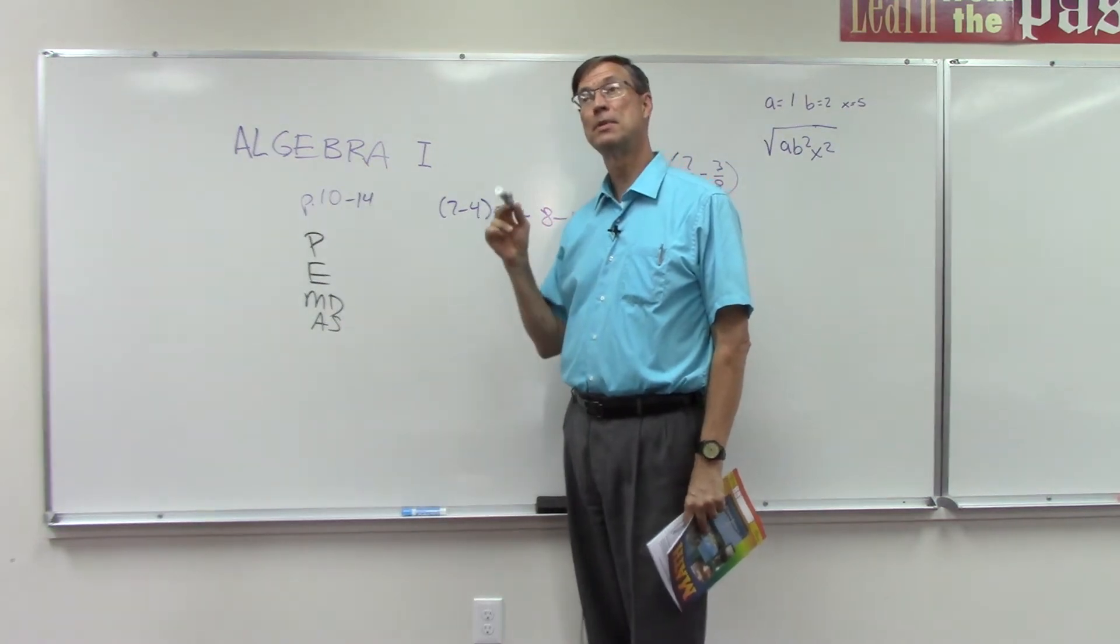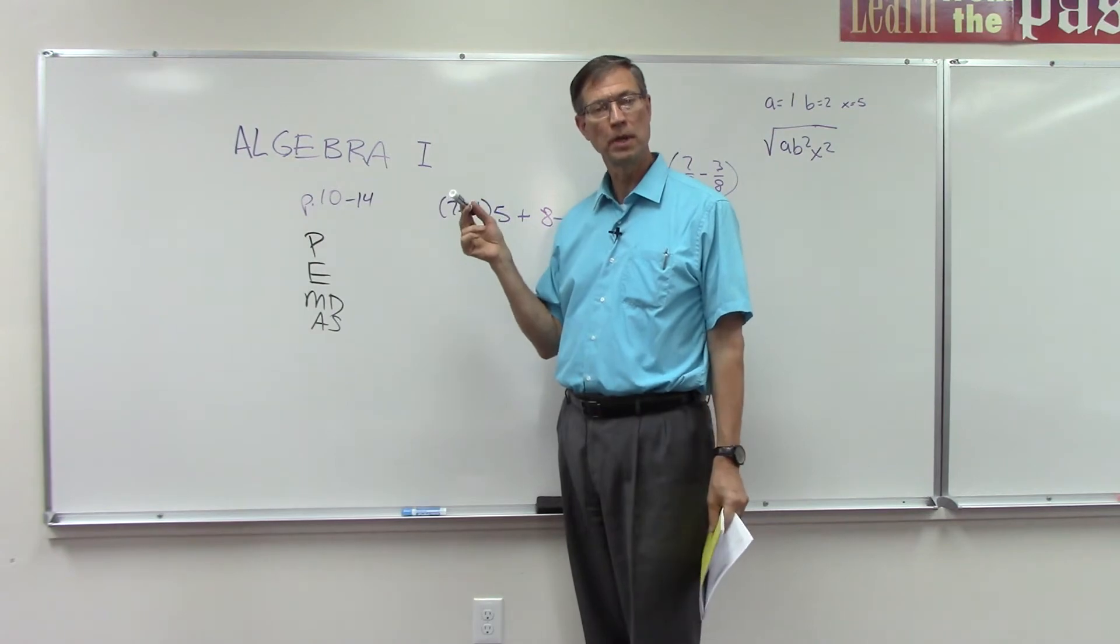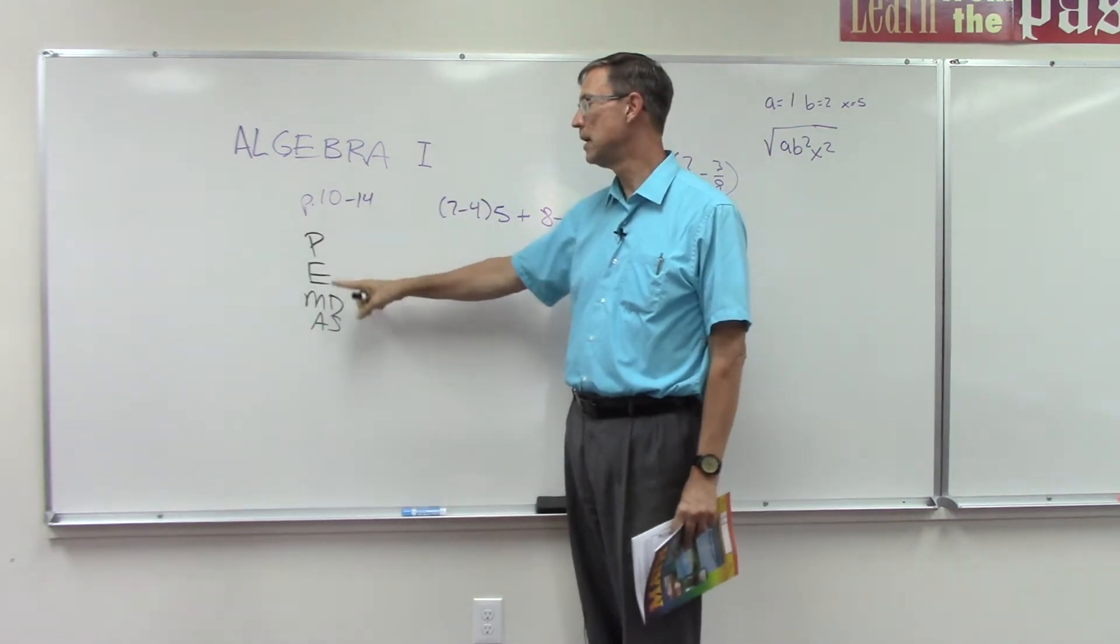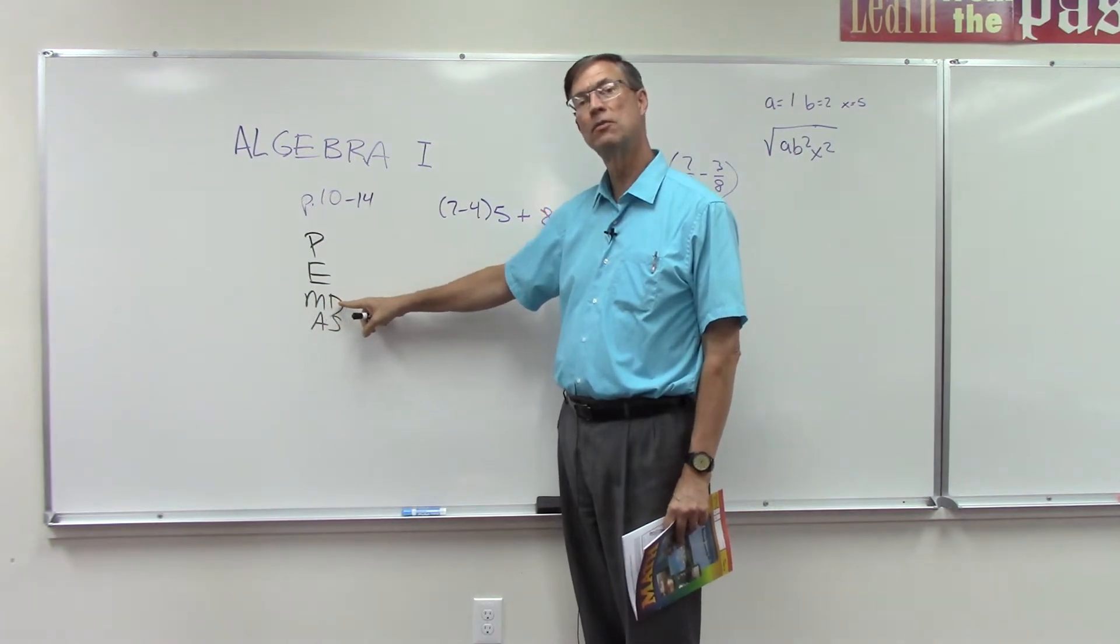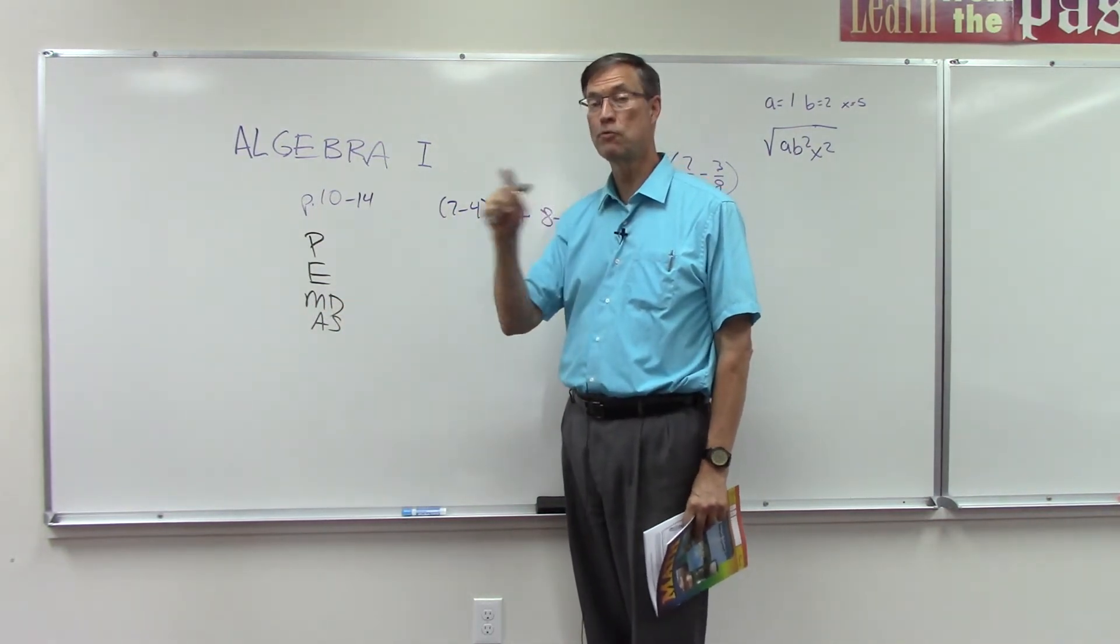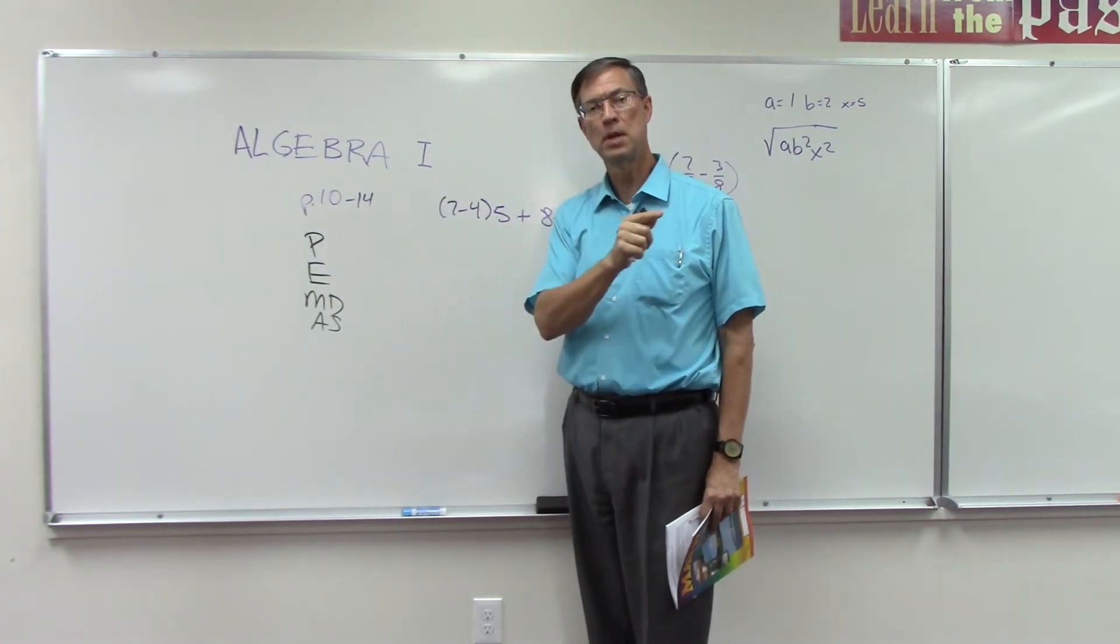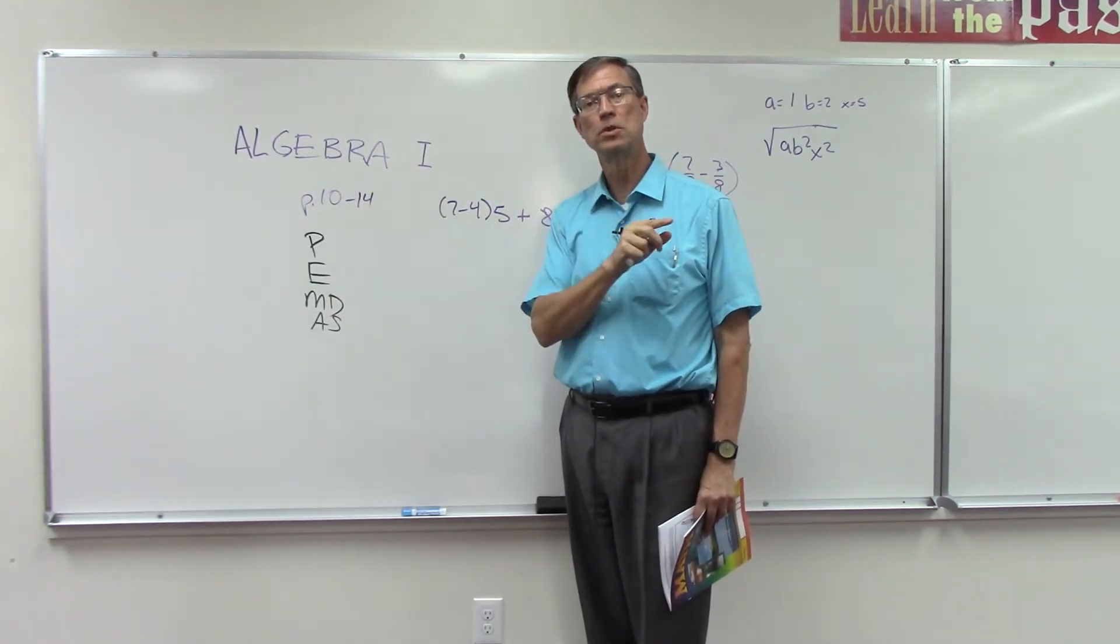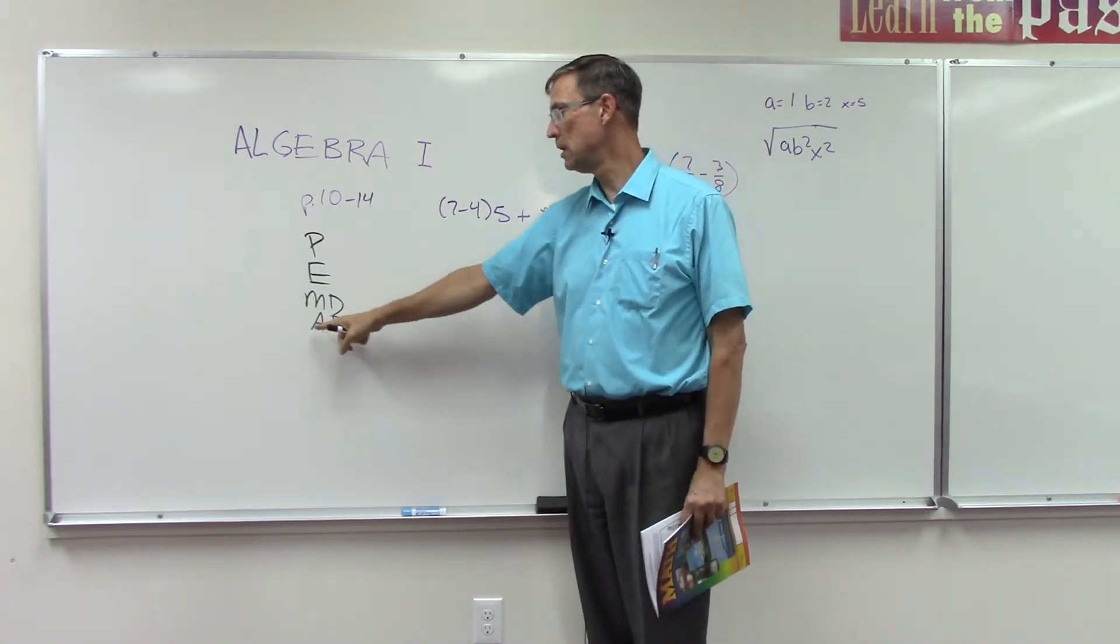E is exponents. That would be the same step as square roots, or if there's a two or three exponent next to a number, you solve that next. M, D stands for multiplying and dividing. We do that in the same step, and we have to go from left to right.